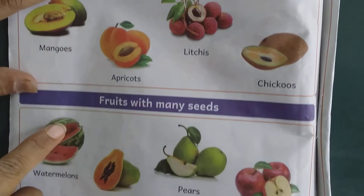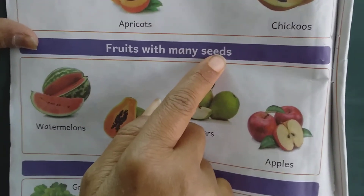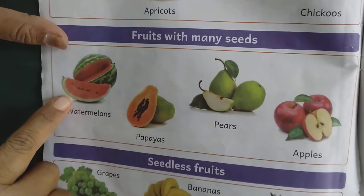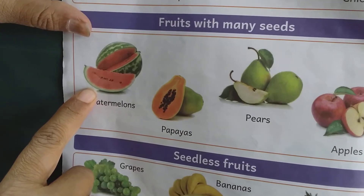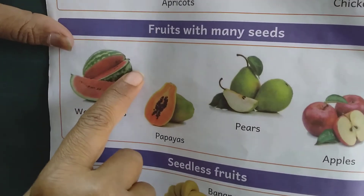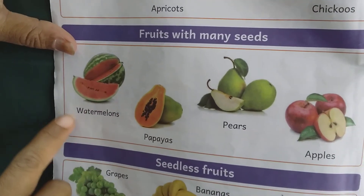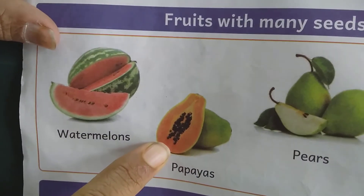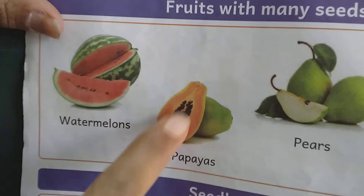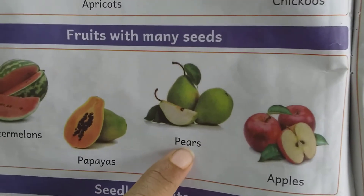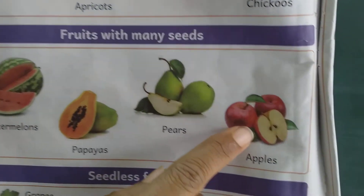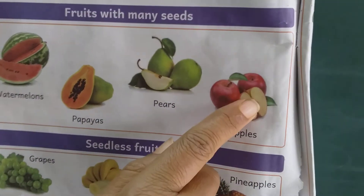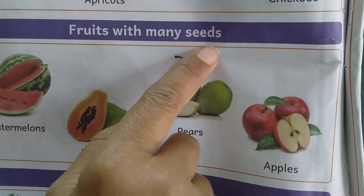And next, fruits with many seeds. Here we have learnt about one seed fruits. And here, fruits have many seeds. What are those fruits? Watermelon. It is green outside and red inside, and inside it has many seeds. And this is papaya. Papaya also has many seeds inside. And pears also have many seeds inside. And this is apple. Apples also have some seeds inside. So these fruits have many seeds inside.